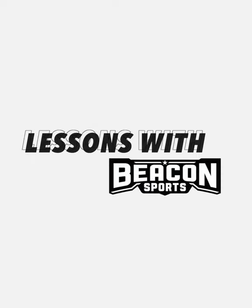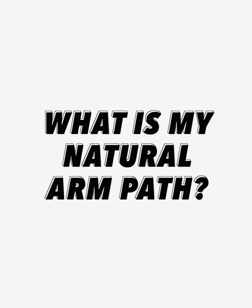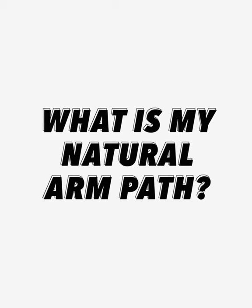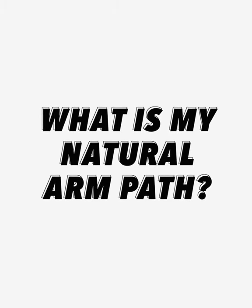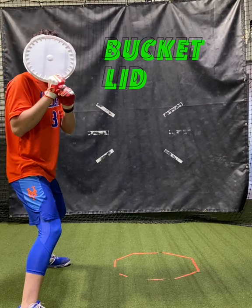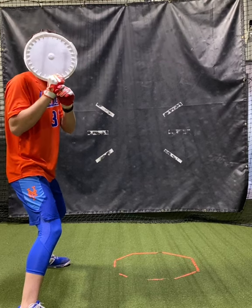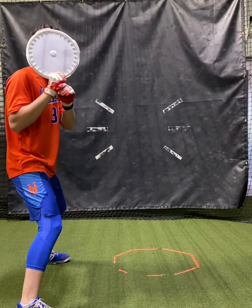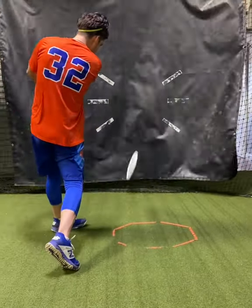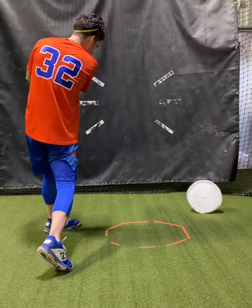Hello everyone, this is Ray from Beacon Sports. I often get asked what is my natural arm path through impact of the ball. To demonstrate this, we're going to use a bucket lid. I'm asking Nick to hold the bucket with his back hand and swing through a middle-high pitch.